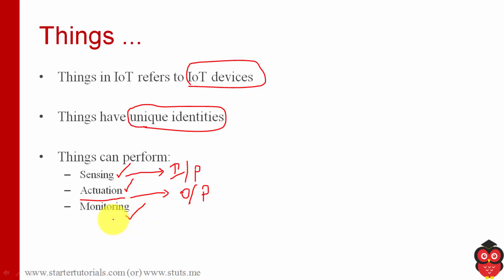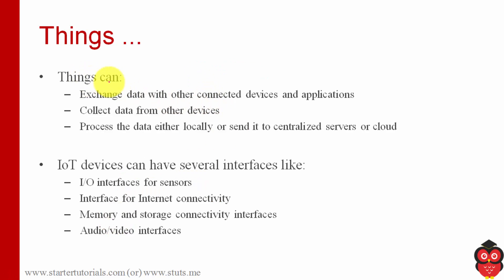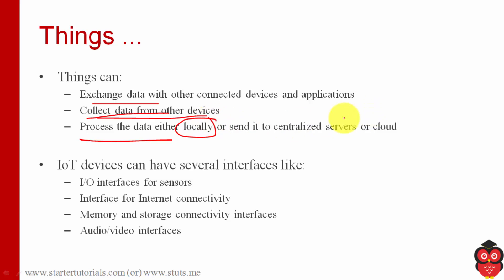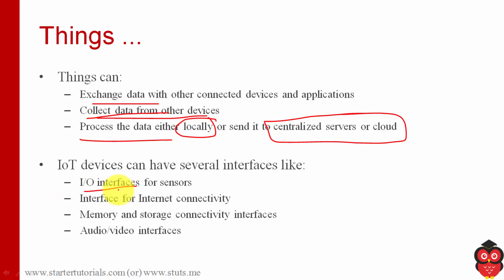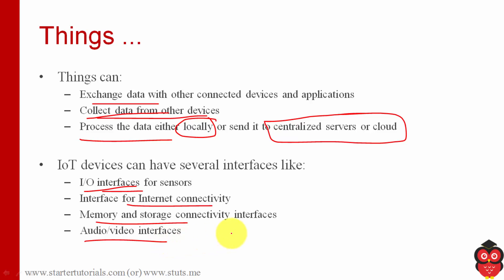Every device can also provide monitoring — that is, managing the device. Things can exchange data with other devices, sense or collect data from other devices, and process the data either locally or send it to centralized servers or cloud through the internet. IoT devices can have different interfaces: interfaces for input-output, interfaces for internet connectivity like Ethernet or wireless interfaces, memory and storage interfaces to store data, and audio or video interfaces.